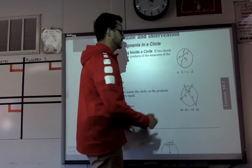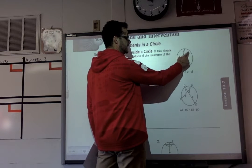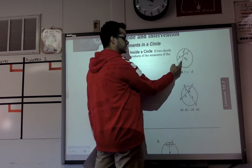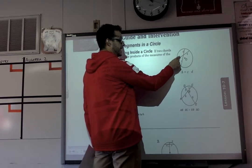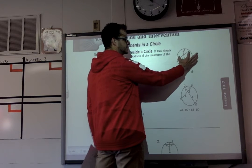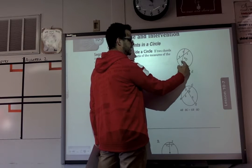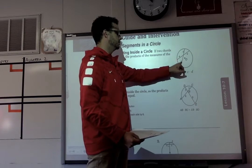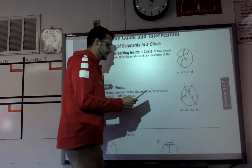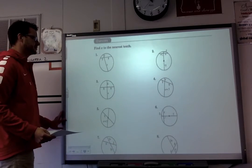In this case, we have two chords. One is cut into segment A and B, and the other is separated into segment C and D. So we can say that A times B — the two segments of one chord — are equal to the product of the segments of the other chord. So A times B equals C times D. Let's go ahead and get right into some examples.